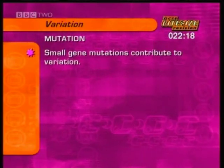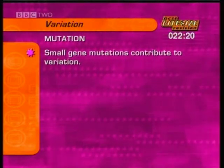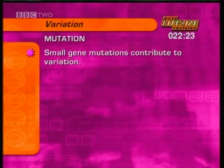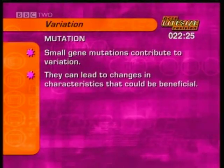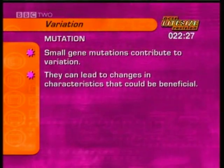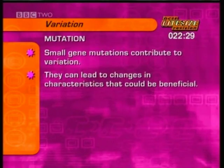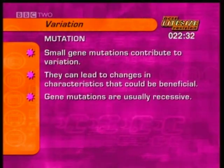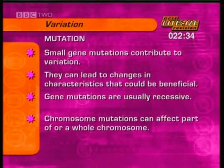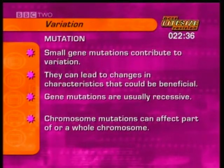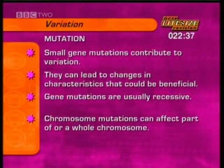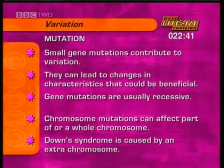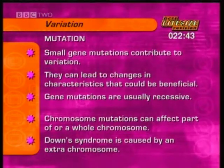Small mutations, where a gene is slightly altered, contribute to variations between generations and can lead to changes in characteristics that can be damaging or beneficial. Gene mutations are usually recessive, so their effect is often hidden by dominant genes. Whilst in chromosome mutations, a major change occurs which can affect part of, or a whole, chromosome. Down syndrome is caused by the presence of an extra chromosome.